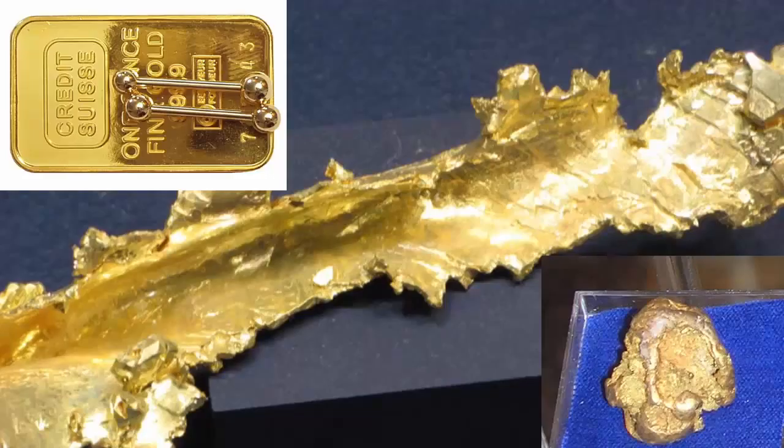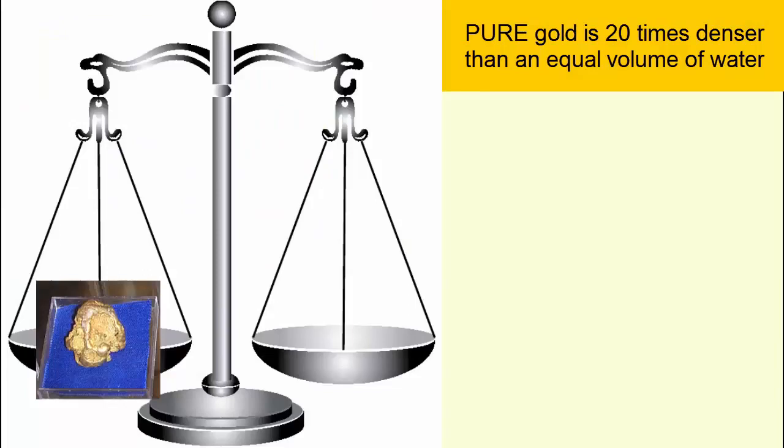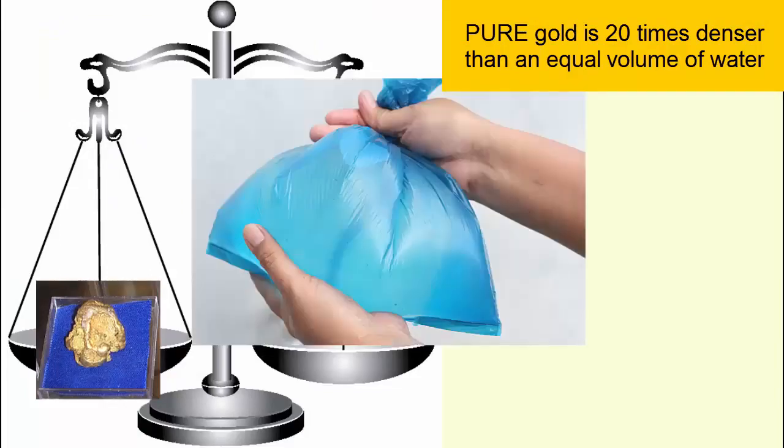So how do we use density to determine the purity of gold? Pure gold has a density twenty times greater than water. So weigh your gold sample and compare it to the weight of twenty times the gold nugget's volume in water. If they aren't the same, the gold isn't pure.